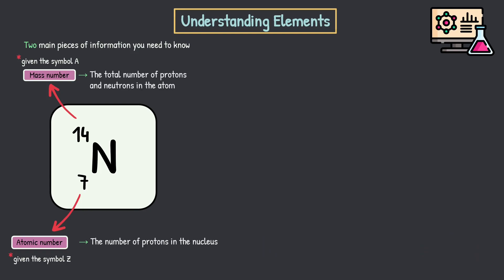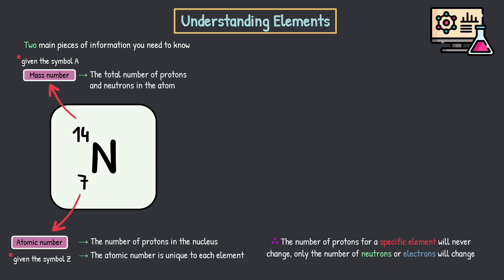There's something really important — just a little bit of recap here. The atomic number is unique to each element, which means the number of protons for a specific element will never change. Only the number of neutrons or electrons will change. If you change the number of protons, it is no longer the same element. So that's really important to get your head around.